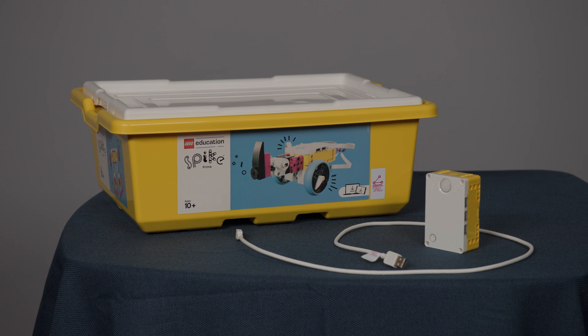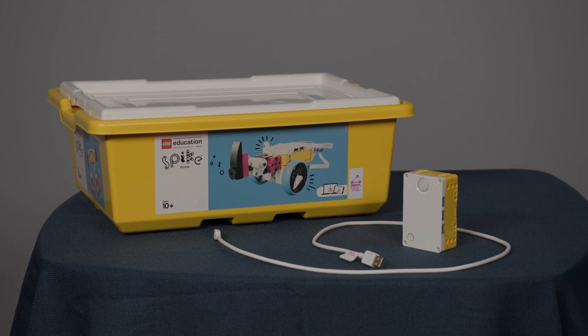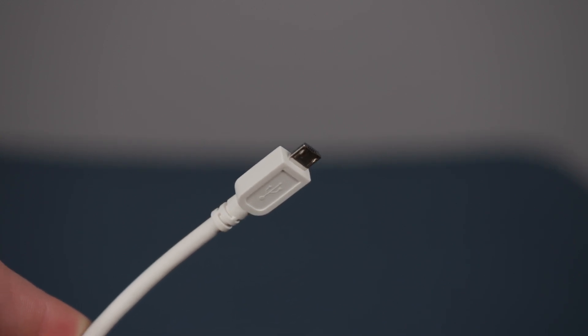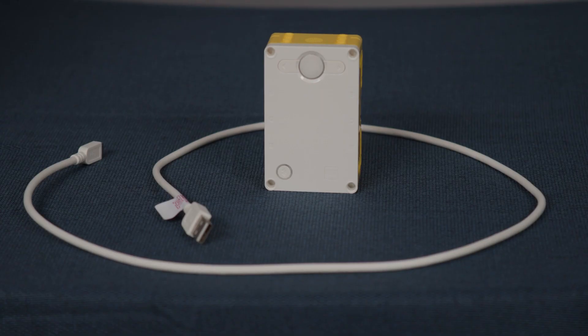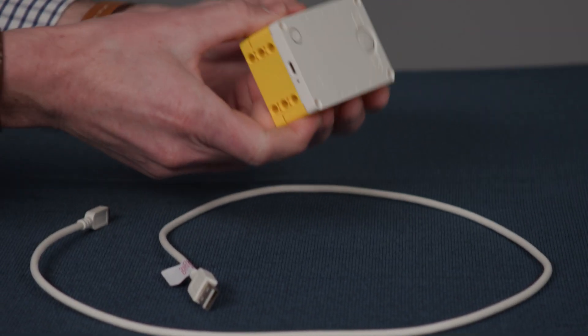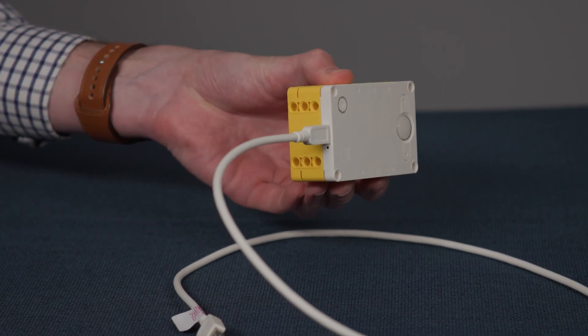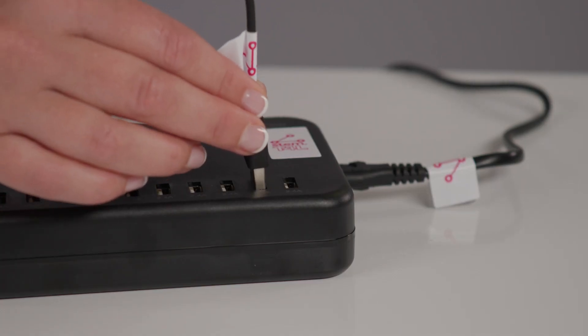Before the kit is used, it's a great idea to charge the Spike Prime Hub. The hubs come with micro USB cable. Only the supplied cable should be used when charging the hub to ensure the device is not harmed. You'll find the micro USB port on the front face of the hub on the opposite end to the center button. You can easily charge many of the smart hubs together using this charging dock.